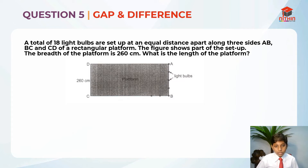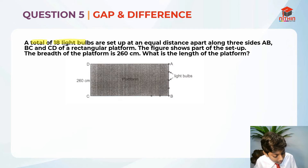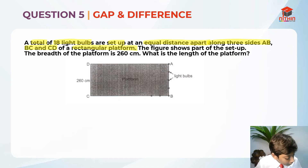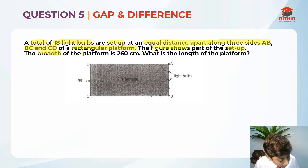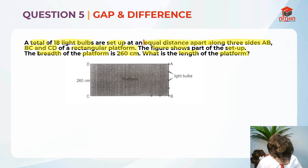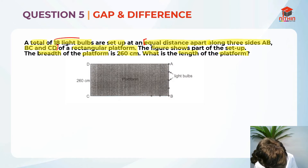Now that we have read the question, we should underline and highlight the key information. A total of 18 light bulbs are set up at an equal distance apart along 3 sides AB, BC and CD of a rectangular platform. The breadth of the platform is 260 cm. These are the keywords, and 18 light bulbs is our very important keyword.